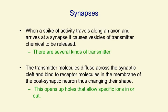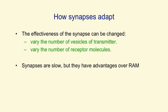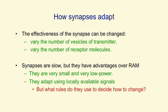Synapses adapt, and that's what most of learning is — changing the effectiveness of a synapse. Synapses adapt by varying the number of vesicles that get released when a spike arrives, or by varying the number of receptor molecules that are sensitive to the released transmitter molecules. Synapses are very slow compared with computer memory, but they have a lot of advantages: they're very small and very low power, and they can adapt — that's the most important property. They use locally available signals to change their strengths, and that's how we learn to perform complicated computations. The key question, of course, is how do they decide how to change their strengths? What are the rules for how they should adapt?